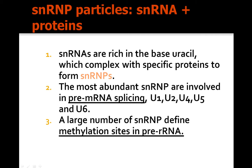The most abundant HNRNPs are involved with pre-mRNA splicing. U1, U2, U3, and U6 snRNAs complex with specific proteins to form SNRNPs. A large number of SNRNPs contain different methylation sites in pre-RNA.